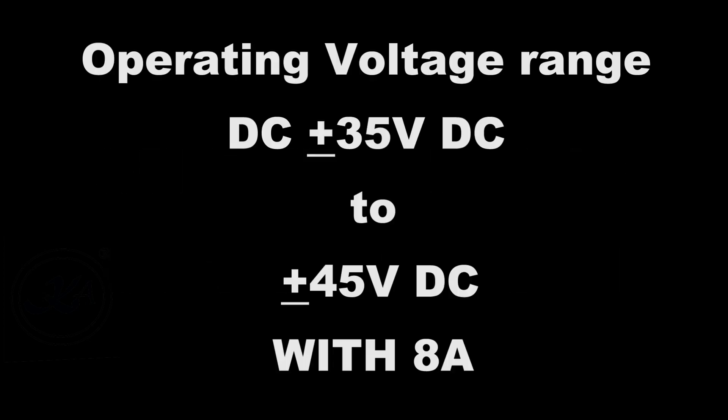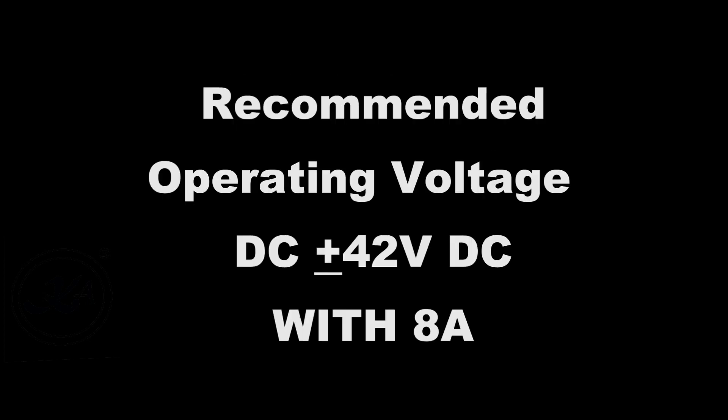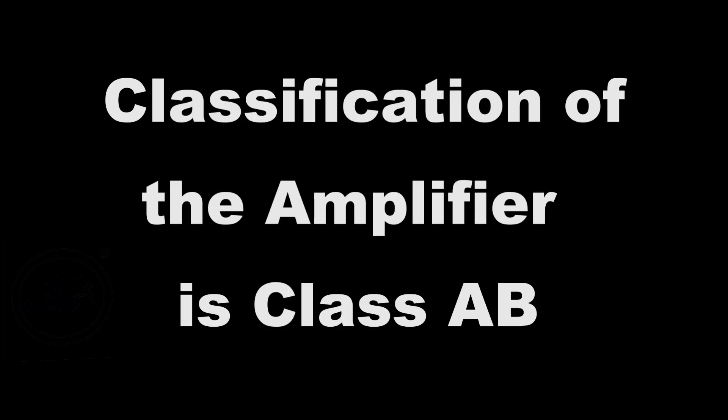Here are the specifications of the module Ka2212. The operating voltage range is from DC plus-minus 35V to plus-minus 45V DC dual supply, with a minimum of 8 amperes. The recommended operating voltage is DC plus-minus 42V with a minimum of 8 amperes. The input impedance of this amplifier module is 56 kilo-ohms. The classification of this amplifier module is Class AB.